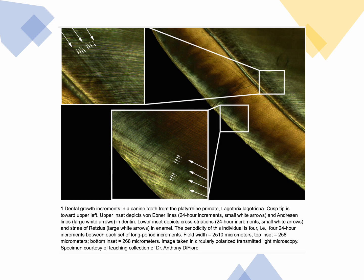In this slide, with special staining, you can see both types of lines together. The lines far apart from each other are the Anderson lines, which represent weekly or near-weekly secretion of dentine. The small white arrows indicate the von Ebner lines, which represent the daily secretion of dentine. You can also recognize the enamel and the very distinctive-looking dental tubules in the dentine.